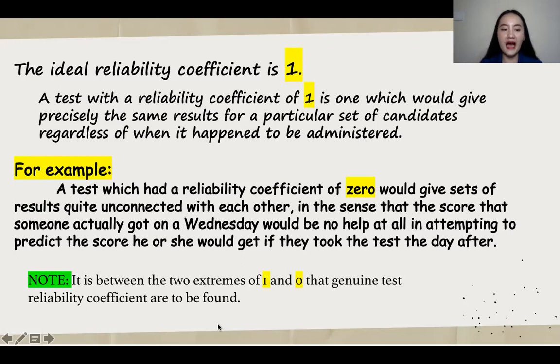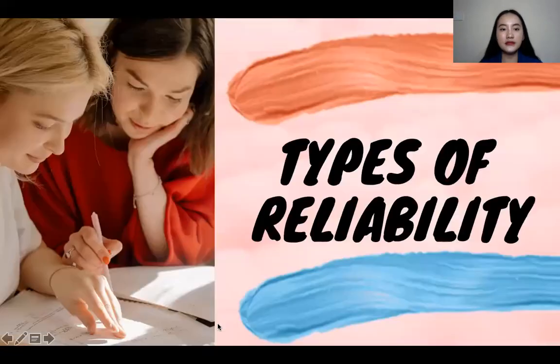So take note that it is between the two extremes of one and zero that the true or genuine test reliability coefficient are to be found. Now let's proceed to the types of reliability.